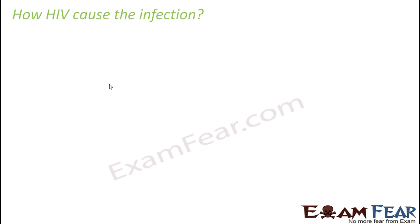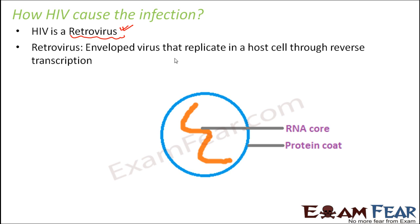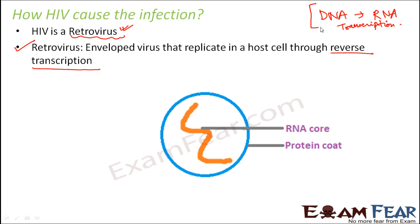HIV is a retrovirus — an enveloped virus that replicates in a host cell through reverse transcription. Transcription is the process in which RNA is synthesized from DNA. Here, we are talking about reverse transcription because in viruses the genetic material is RNA, not DNA. Inside the retrovirus there is the viral RNA and outside there is a protein coat.